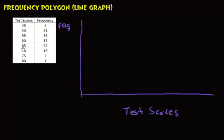How many test scores do I have to put on the x-axis? We have 1, 2, 3, 4, 5, 6, 7, and 8. So mark off 8 spots: 1, 2, 3, 4, 5, 6, 7, and 8. Then I'll label them: 45, 50, 55, 60, 65, 70, 75, and 80.